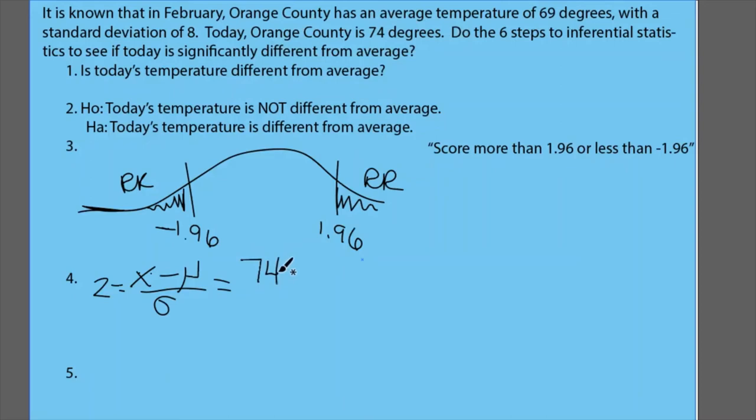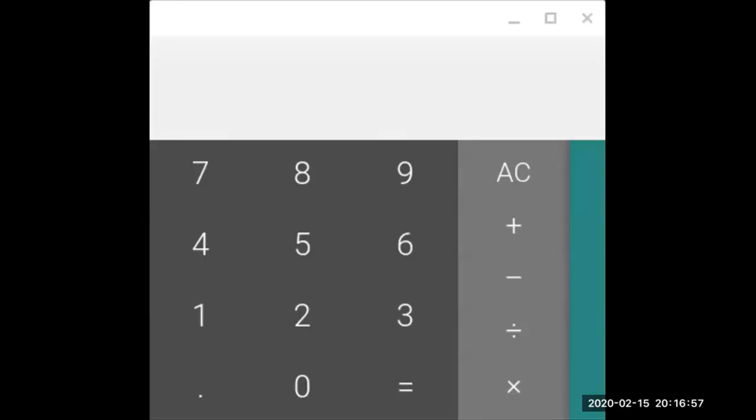Hopefully you saw the 74. So our z-score is going to be 74 minus, now what's the μ? That's going to be 69. And then what is our standard deviation? Hopefully you see that that is labeled standard deviation, so that's going to be 8. Now we're going to have to break out our calculators unless you're wicked good at simple math, which I am not.